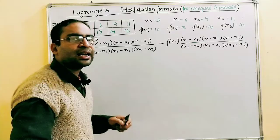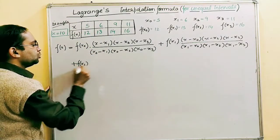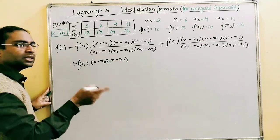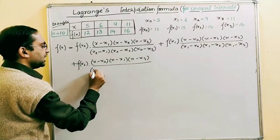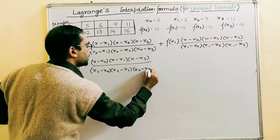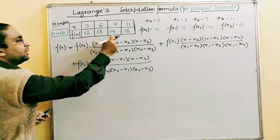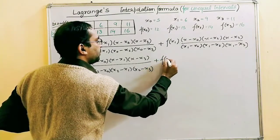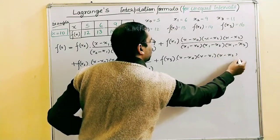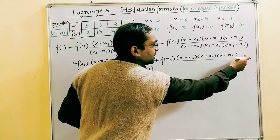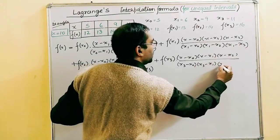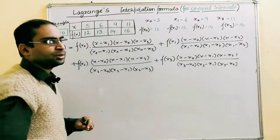The third term begins with f(x₂). The numerator is (x − x₀)(x − x₁)(x − x₃) — skipping (x − x₂). The denominator is (x₂ − x₀)(x₂ − x₁)(x₂ − x₃). The fourth and last term begins with f(x₃). The numerator is (x − x₀)(x − x₁)(x − x₂) — skipping (x − x₃). The denominator is (x₃ − x₀)(x₃ − x₁)(x₃ − x₂).